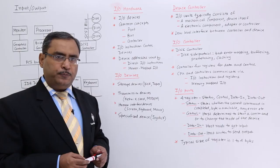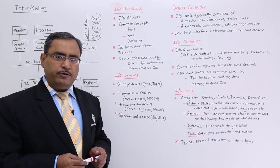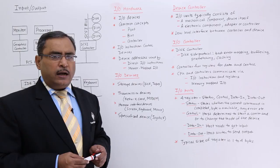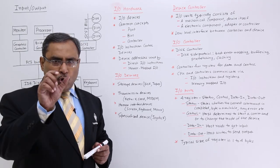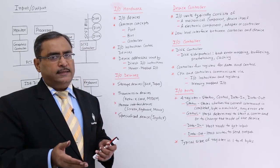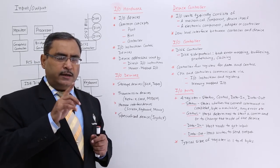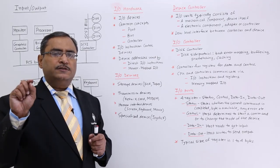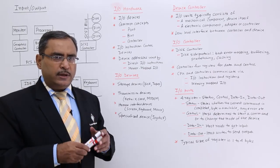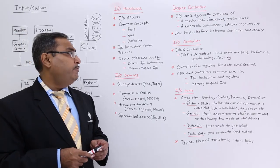There are three different methods for bus arbitration: daisy chaining arbitration, polling, and independent requesting. In daisy chaining arbitration, one module at a time gets permission to access the bus. The first module gets permission; if it is ready, it accesses the bus. Otherwise, the bus grant signal is passed to the next module, and so on. The other arbitration techniques are polling and independent requesting.